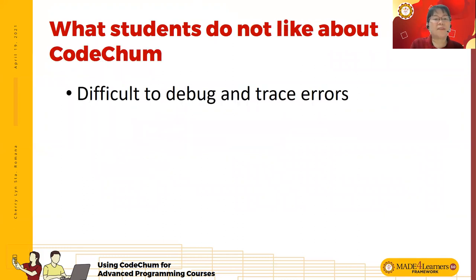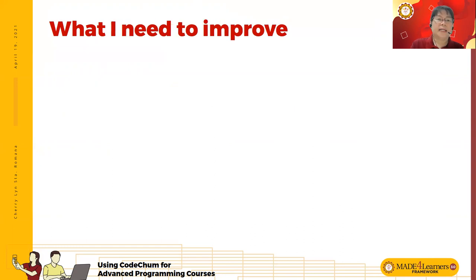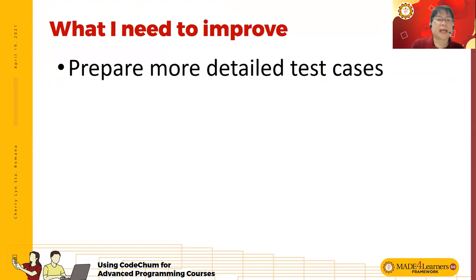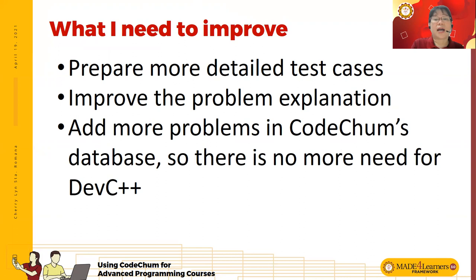What students didn't like about Cochum was the difficulty of debugging and tracing errors — Dev C++ is better for that. There's also limited screen space, which I also feel. For improvements, I need to prepare more detailed test cases and improve the problem explanations so that other teachers and students can use them. I also need to add more problems to Cochum's database so there's no more need for Dev C++ in the future.